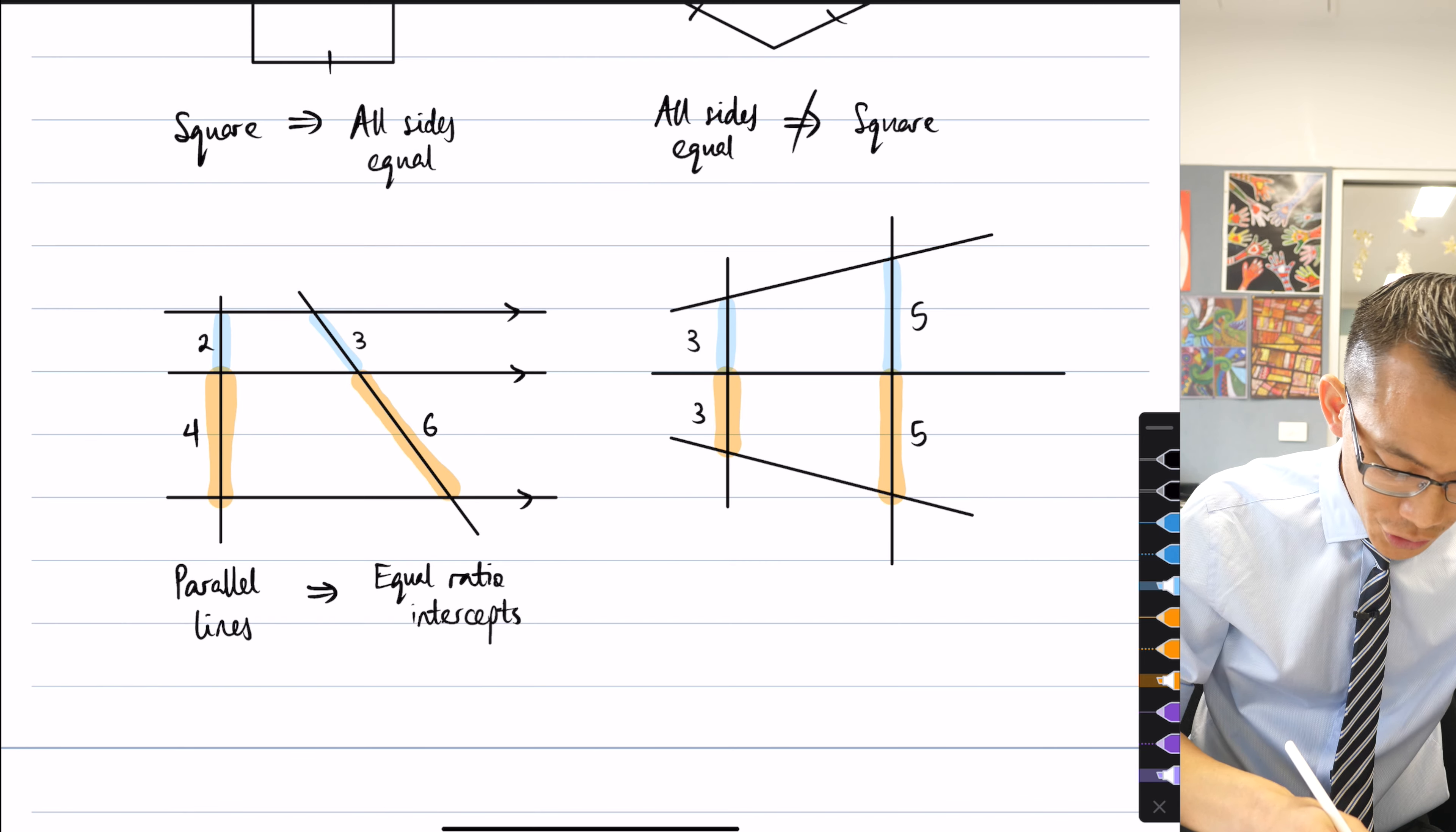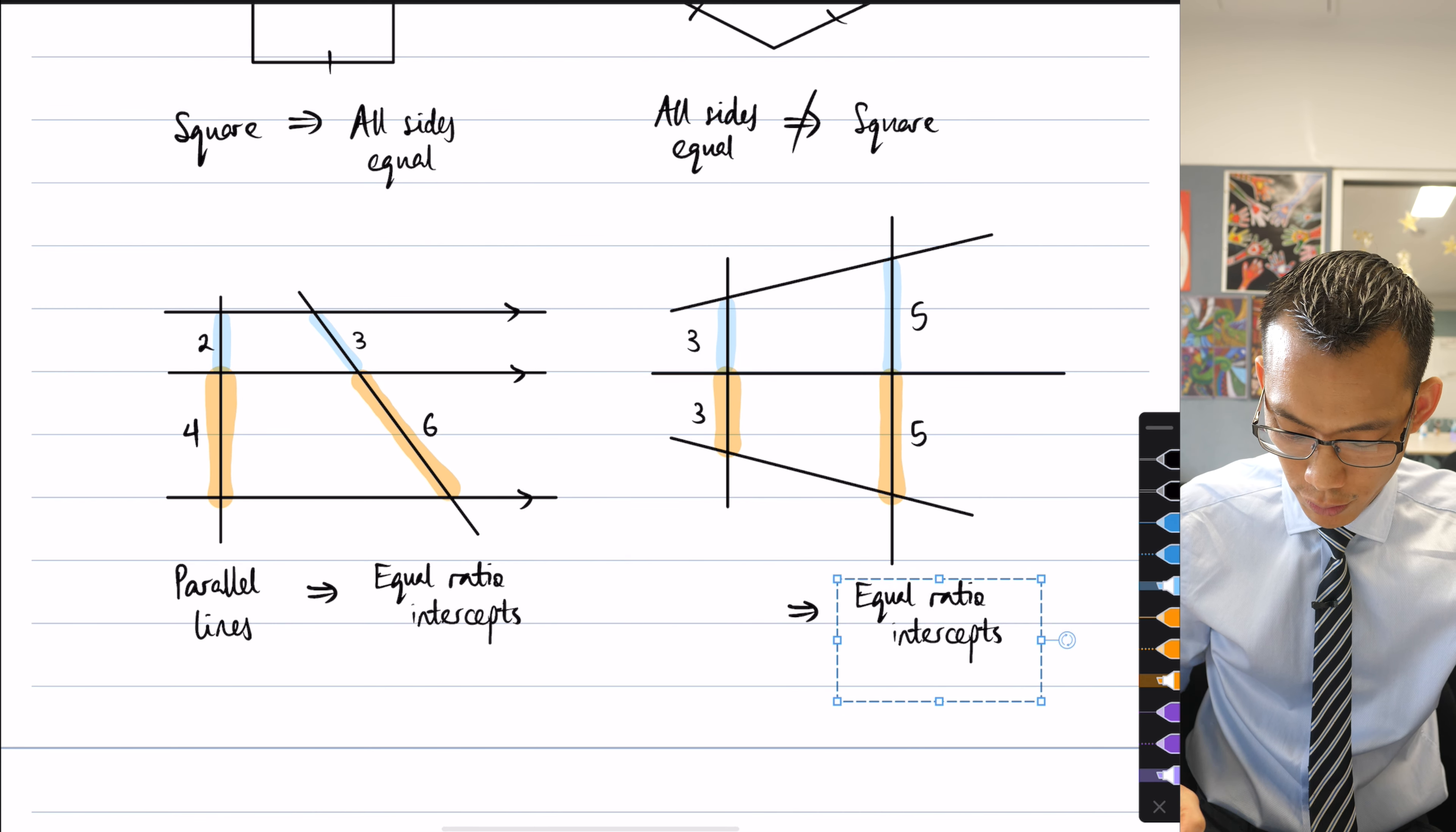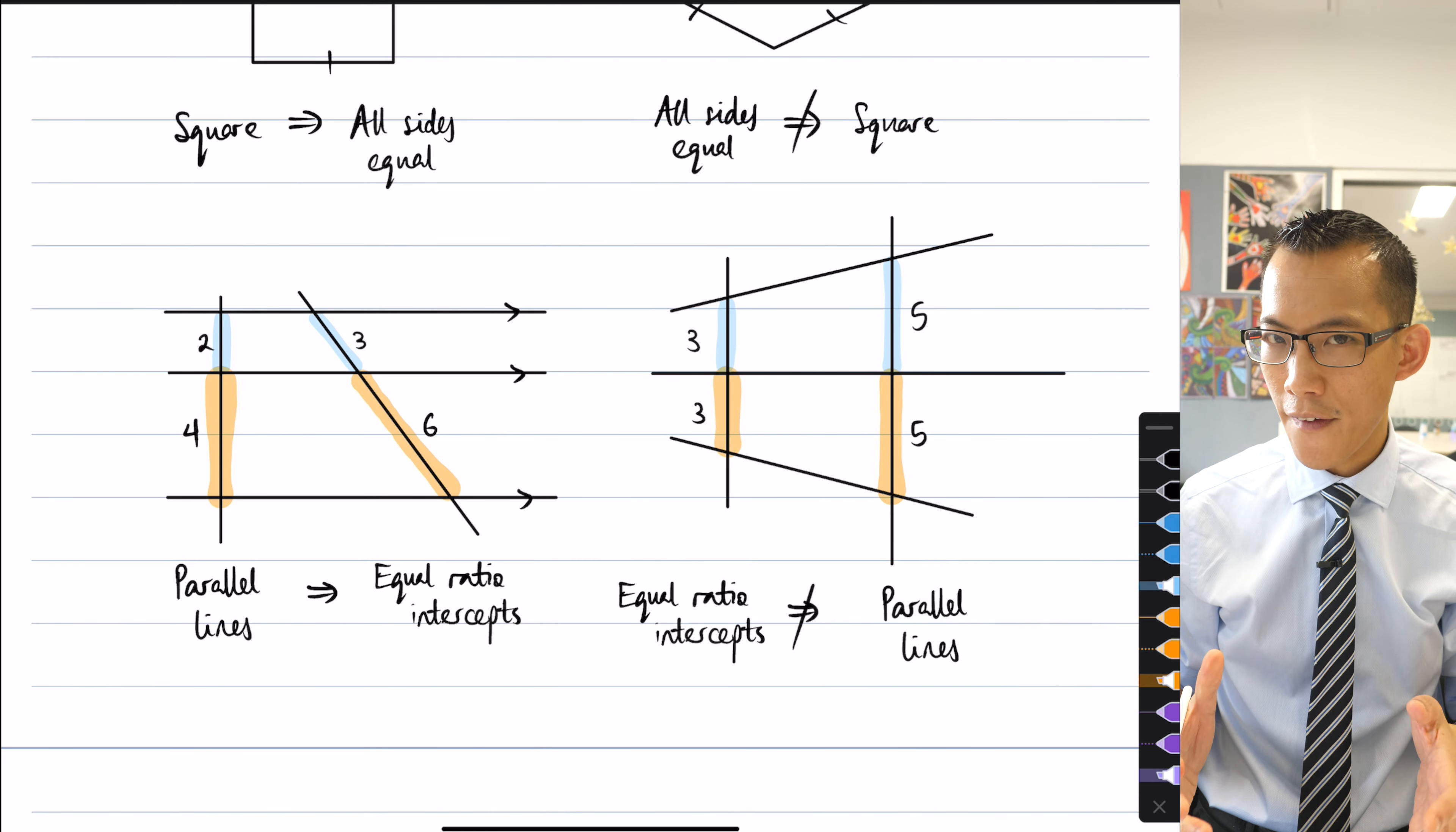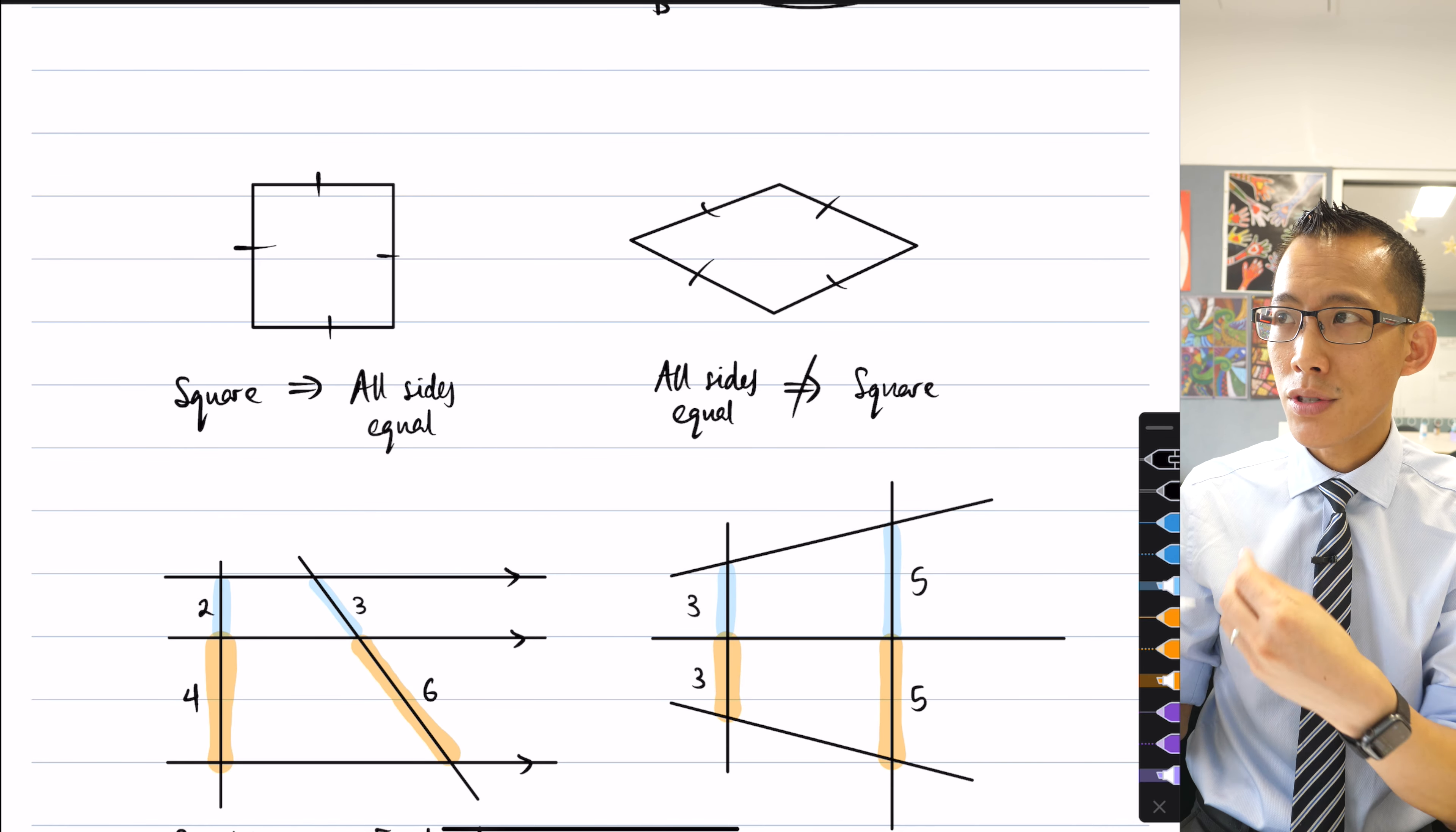And this is an example where I had to kind of manufacture a counter example that made it very obvious, but it wouldn't be as obvious as this square rhombus thing, right? So what I'm trying to say is, when you know something is true, you have to be really careful with the converse. It is sometimes true,